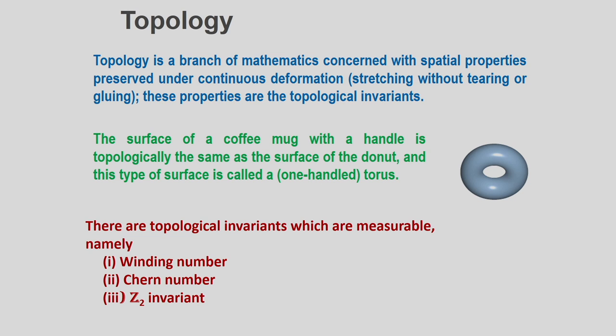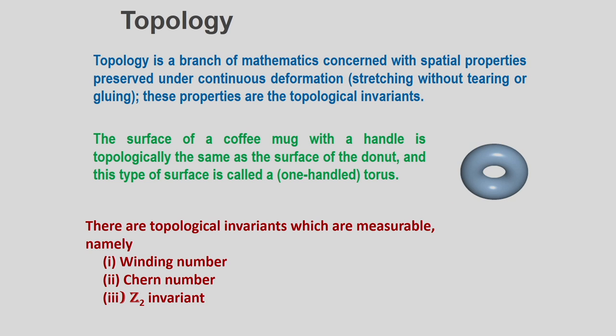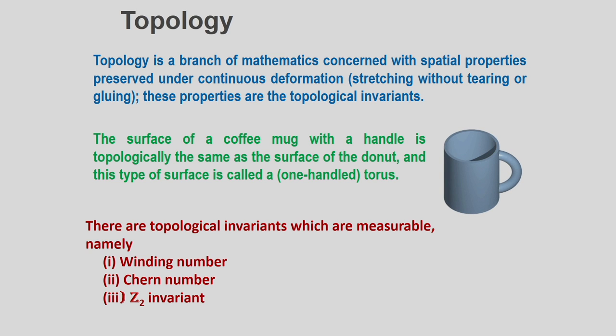We will carry on the same discussion, but now shift towards condensed matter physics — how things borrowed from topology and homotopy theory are applied to the study of materials and experiments that show topological invariants. Topology is a branch of mathematics concerned with special properties preserved under continuous deformation — no stretching, tearing, or puncturing — and these unchanged properties are called topological invariants.